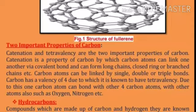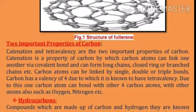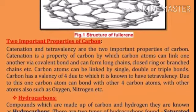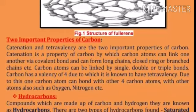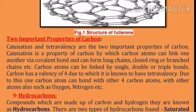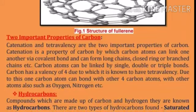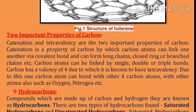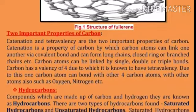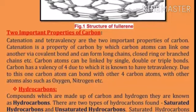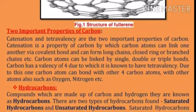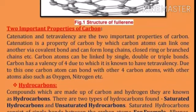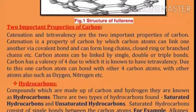Two important properties of carbon are catenation and tetravalency. Catenation is a property of carbon by which carbon atoms can link one another via covalent bonds and can form long chains, closed rings, or branched chains. Carbon atoms can be linked by single, double, or triple bonds.